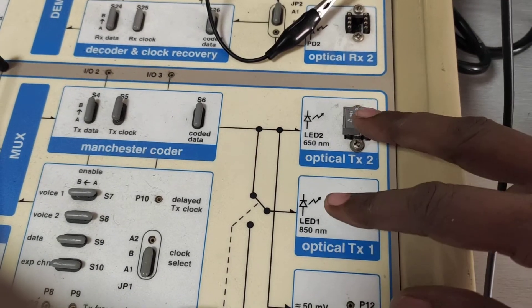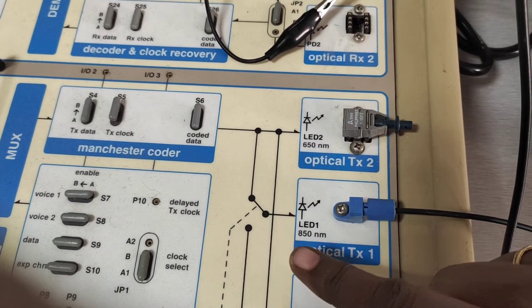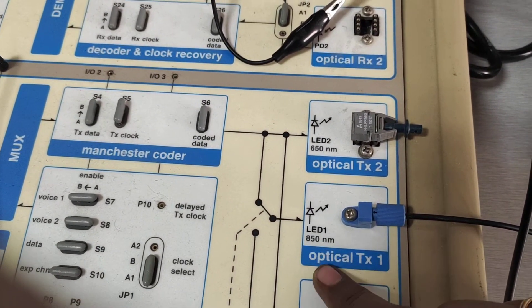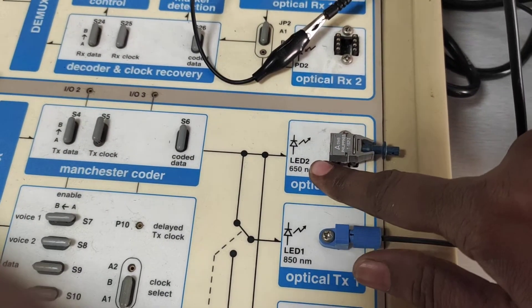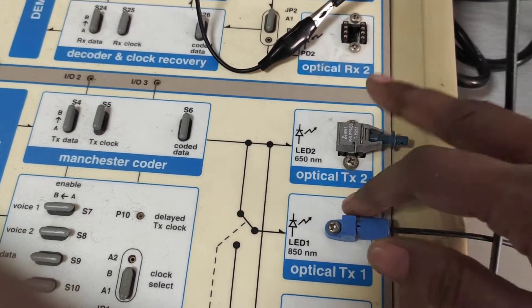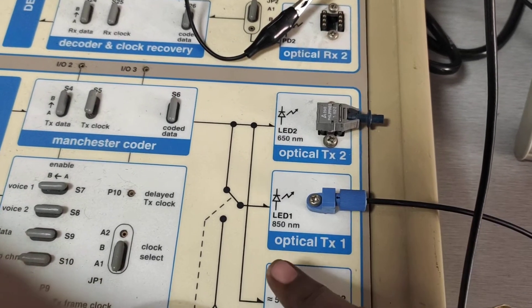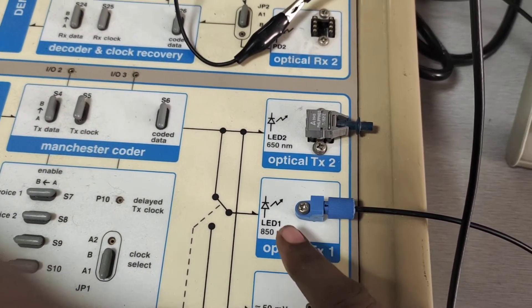Here you observe that there are two Transmitters. One Transmitter is with 850 nanometer and another LED source with 650 nanometer. Generally, we are using 850 nanometer LED source.